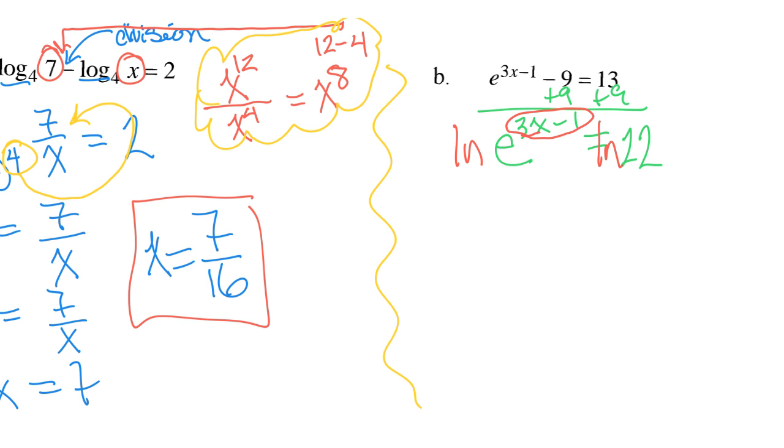And in doing that, I'm allowed to bring my exponent down to be a coefficient. That is another property that we've studied. So this becomes 3x minus 1 natural log of E equals natural log of 22. And this is a no calculator test. So we're going to just leave our answer in terms of natural log. I know that natural log of E is 1.